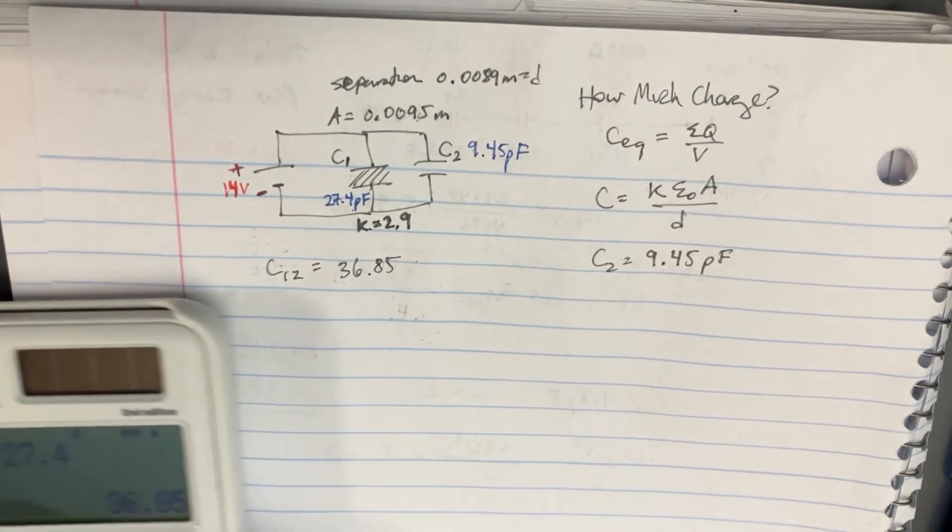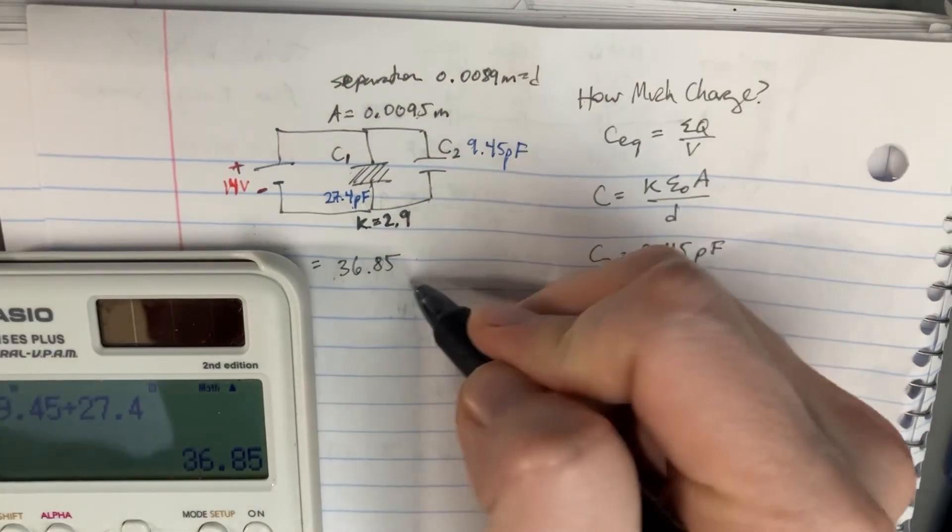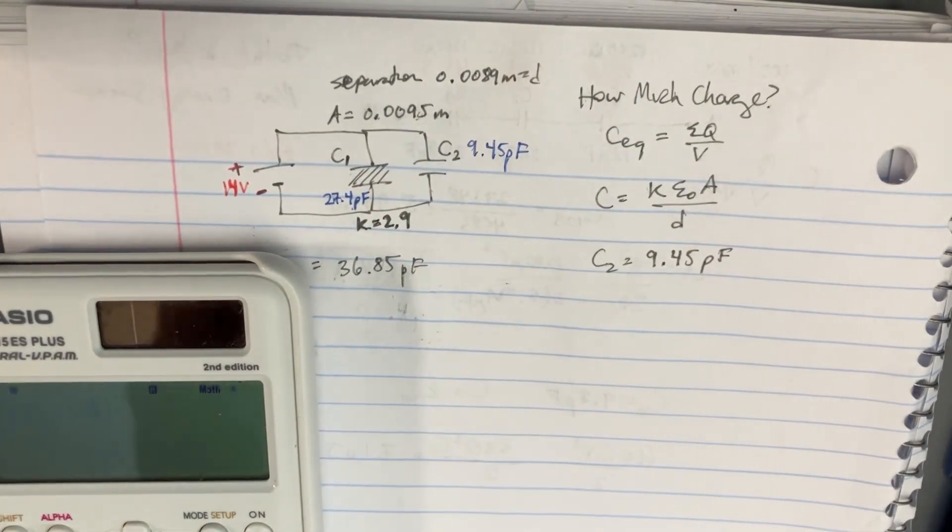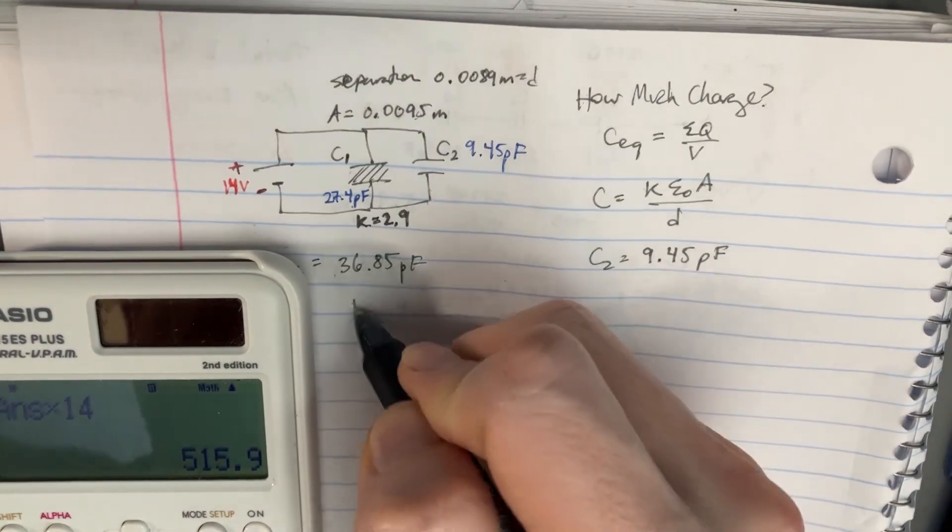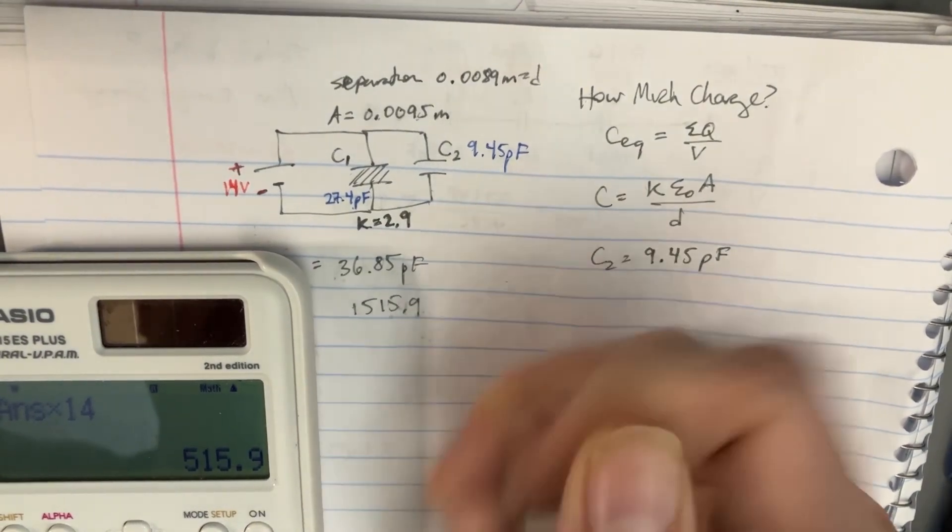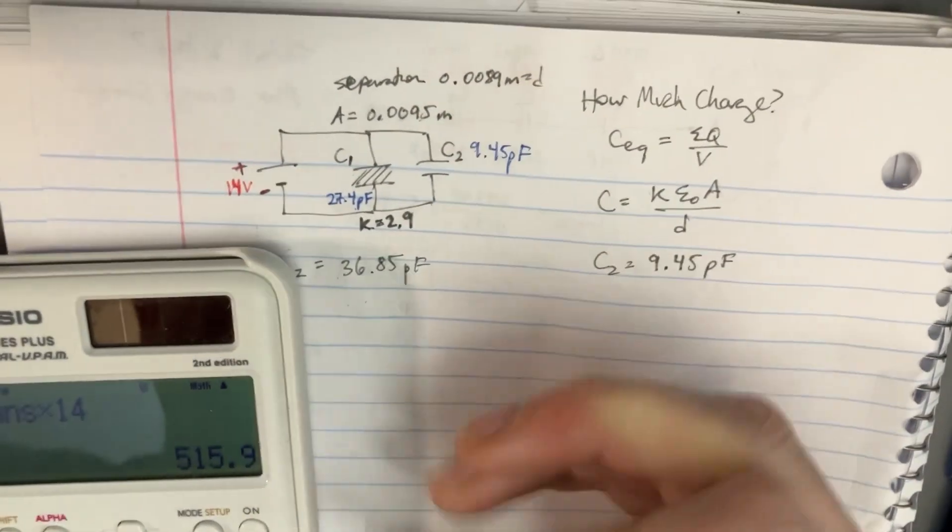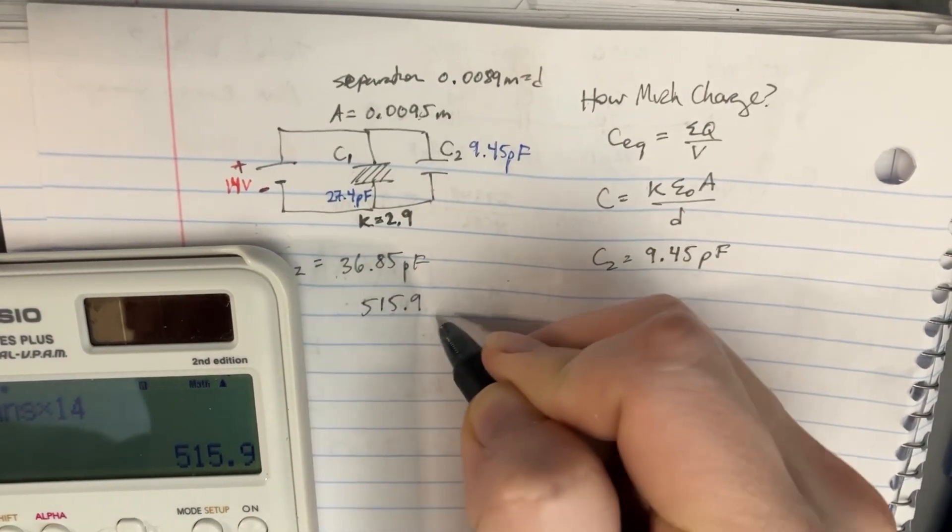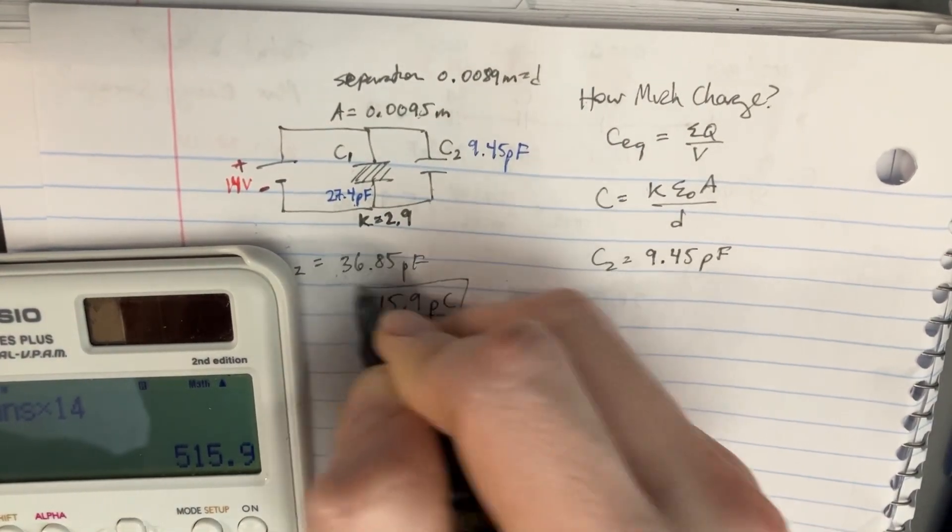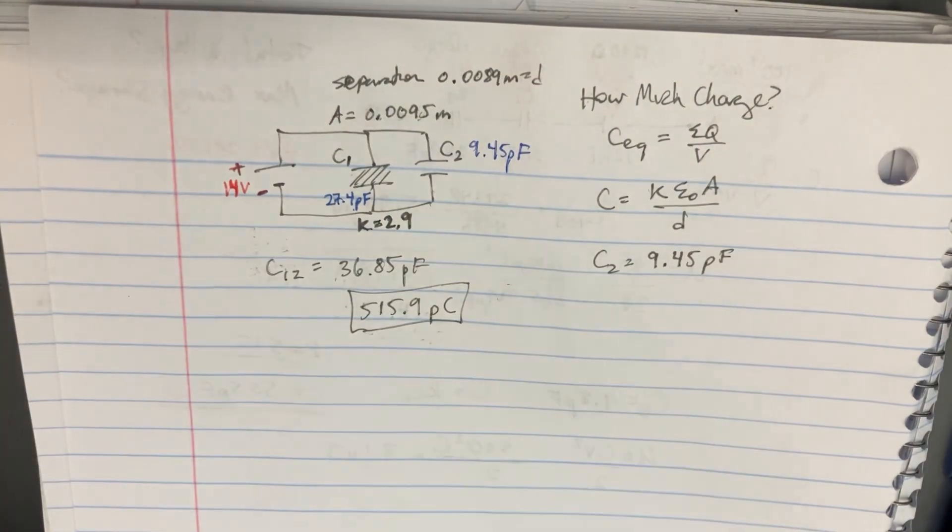And then since we know the voltage, and this is in picofarads, we can just multiply that by 14 and we'll get 515.9 picocoulombs. I think that's going to be the total charge.